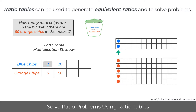Next, two blue chips can be multiplied by two to get four blue chips. So, five orange chips are also multiplied by two to get 10 orange chips.